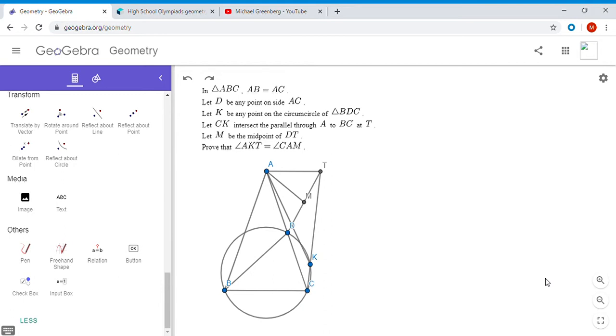We have triangle ABC that's isosceles, so AB is equal to AC, and D is any point on the side AC. You draw the circumcircle of BDC, and K is any point on the circumcircle of BDC. So you kind of have two degrees of freedom there: D is any point on AC, and K is any point on the circumcircle of BDC.